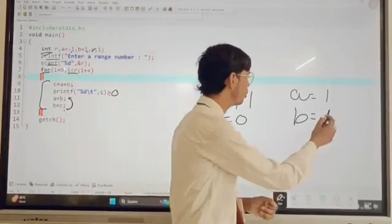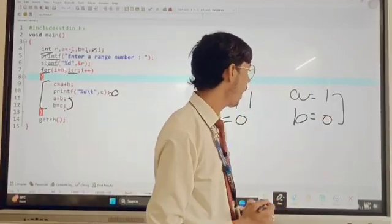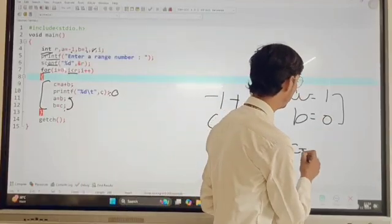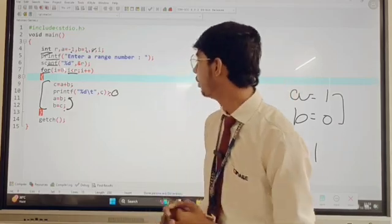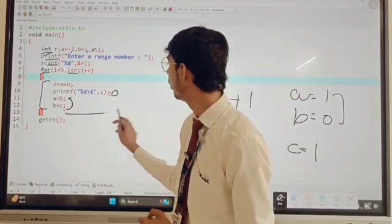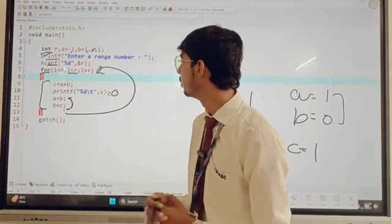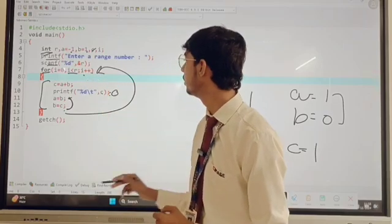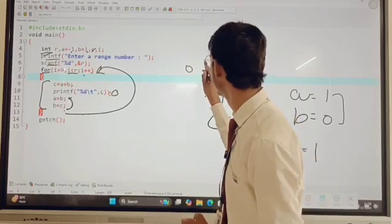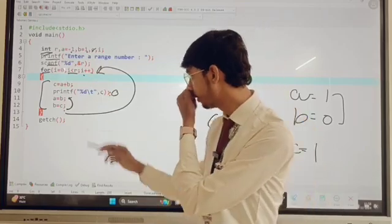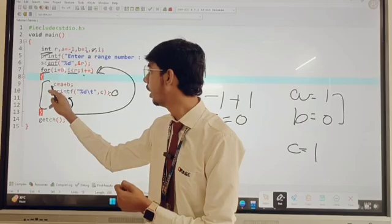Then we can add this two, so c is equal to 1 plus 0 is equal to 1. We can check, after that we go into there, write i plus plus, it means i is equal to 0 and after initialization, i is equal to 1, and again come to this block of code.